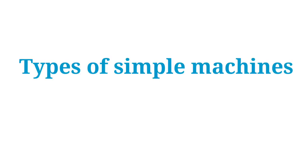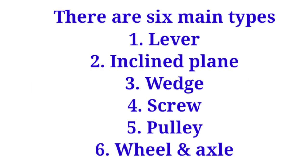Now, the types of simple machines. Simple machines can be classified into six main types: number one, lever; number two, inclined plane; number three, wedge; number four, screw; number five, pulley; number six, wheel and axle. Altogether there are six simple machines.